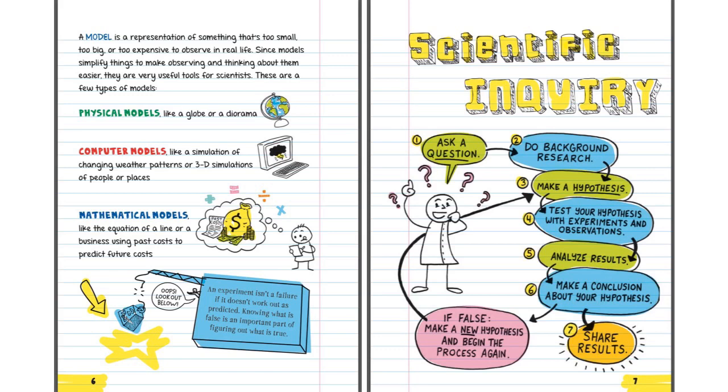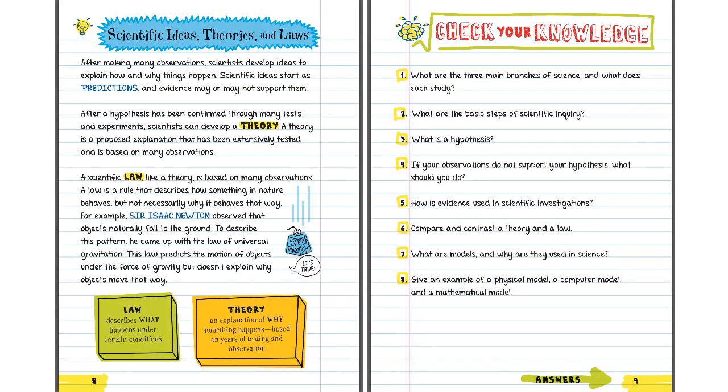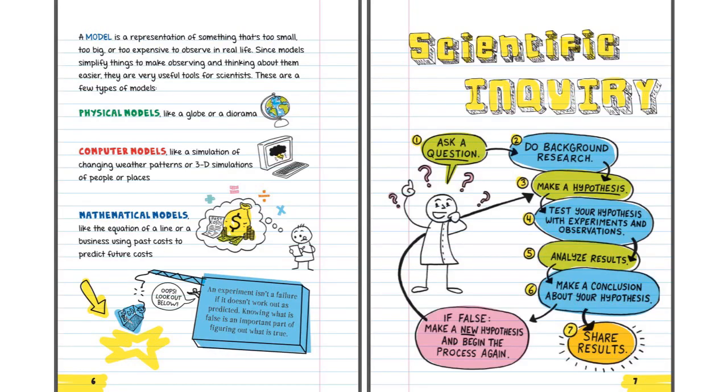Number eight. Give an example of a physical model, a computer model, and a mathematical model. Again, go back to page six. Physical model: Like a globe. A computer model: A simulation of changing weather patterns. A mathematical model: Equation of a line.